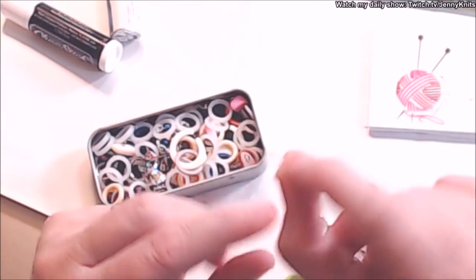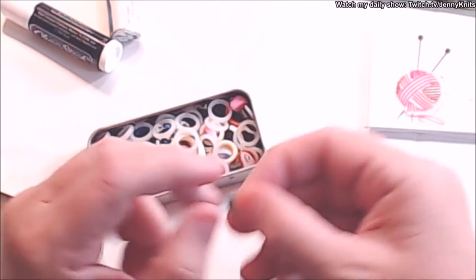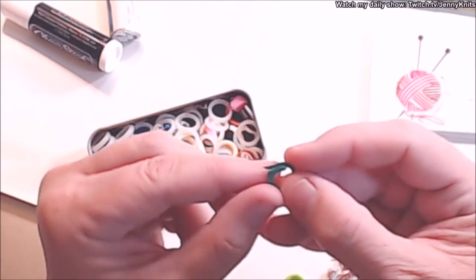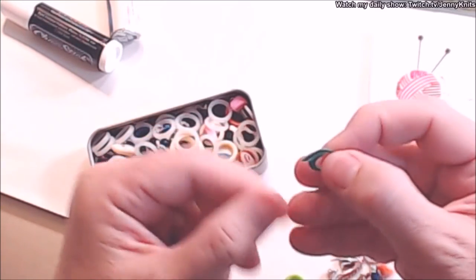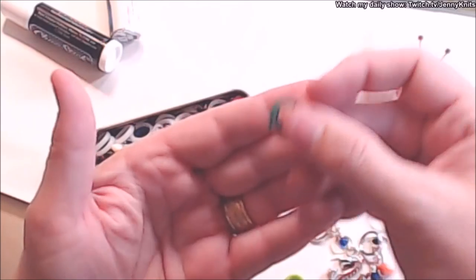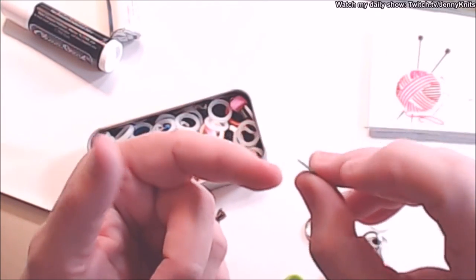You need fixed stitch markers that don't have a beginning and an end. Those just fit right over your needles to hold onto your needles as you're knitting. Very handy.